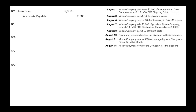A few days later on August 3rd, Wilson Company pays $100 for shipping. Whenever the buyer pays for shipping, they count that under inventory because it's an additional cost of getting the inventory. So we debit inventory and credit cash for $100.